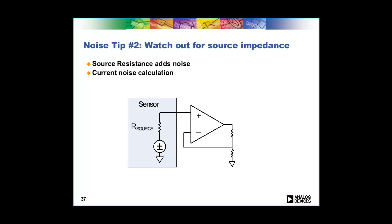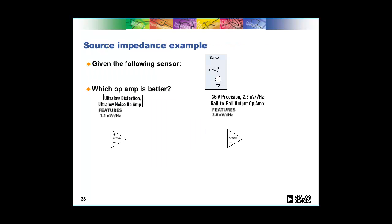The next thing to watch out for is your source impedance. There's two reasons why the source impedance is important. One is the actual source impedance of the sensor contributes its own noise, and the other reason is that the current noise of the amplifier will interact with that sensor source impedance and can cause extra noise in your circuit.